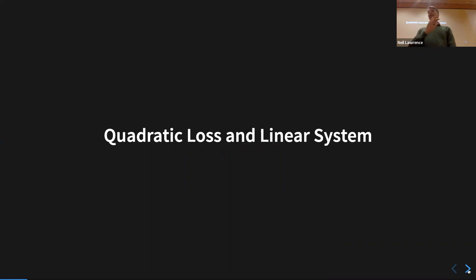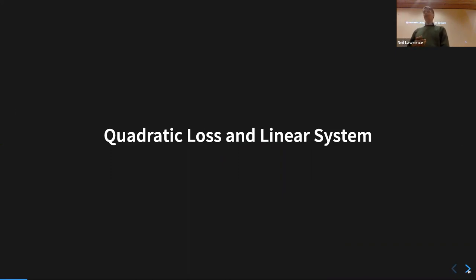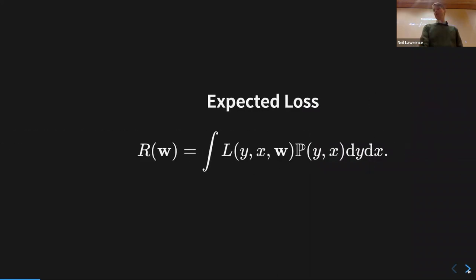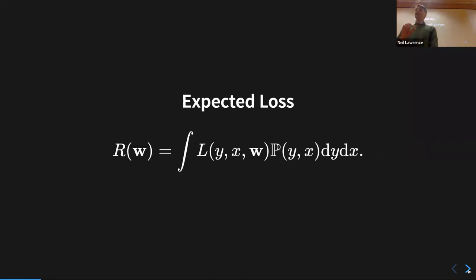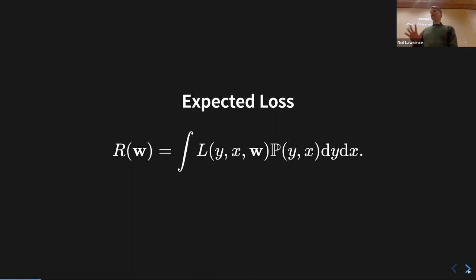Machine learning is based on a prediction function and an objective function. Today we're reviewing particular choices of those: the quadratic loss as the objective function, which you'll have seen going back to high school, and linear systems as the prediction function. The key concept to start from is risk minimization — when you get taught about loss functions, you often don't get reminded about what the actual objective is.